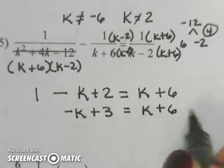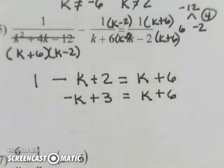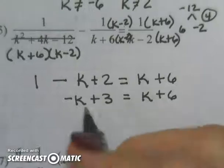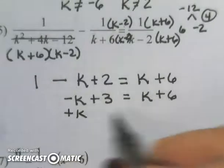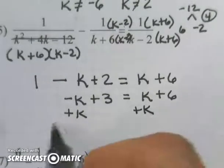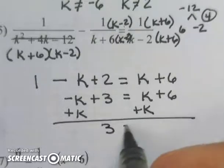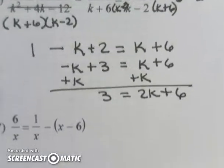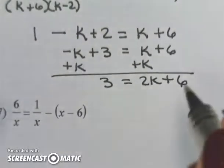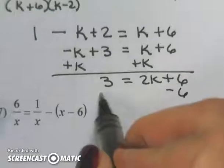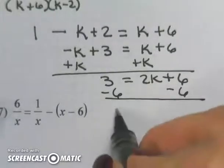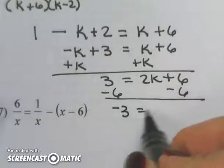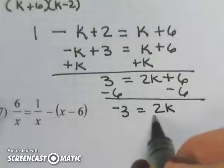Now I have k's on both sides of my equation so I need to eliminate one of them. I'm going to get rid of the negative k by adding 1 k to both sides. 3 is equal to 2k plus 6. I'm going to slide my problem up. Subtract 6. Negative 3 is equal to 2k and divide by 2.